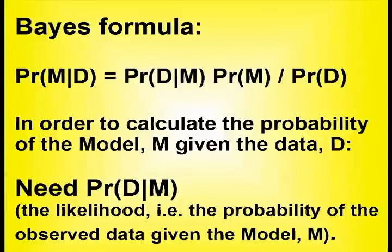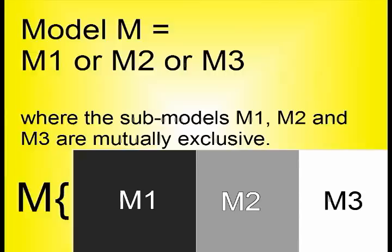The unobserved proposition is often called a model, and in order to find the probability for the model given the data, we need the probability for the data given the model, called the likelihood. Often the likelihood given such a model can be hard to come by. In such cases we divide the model into smaller, disjunct models, where we have a better understanding of the data probabilities.